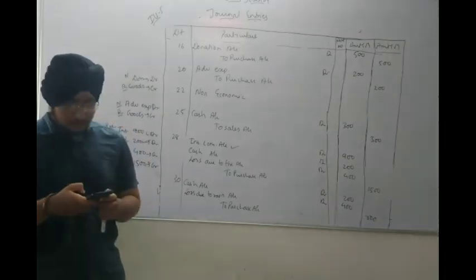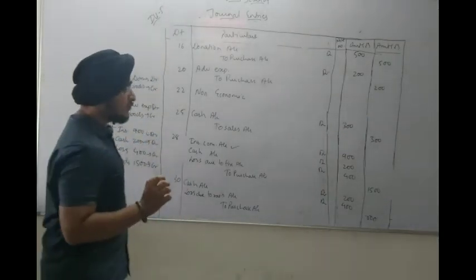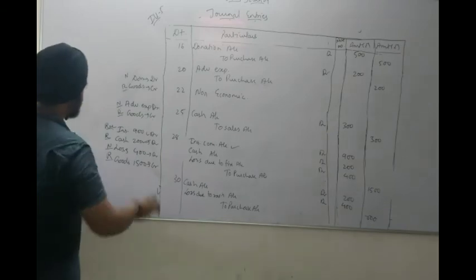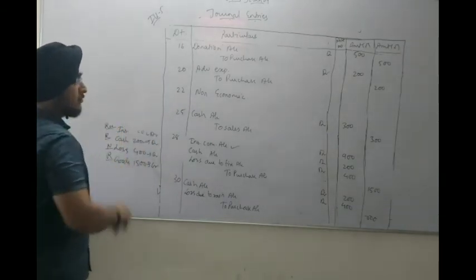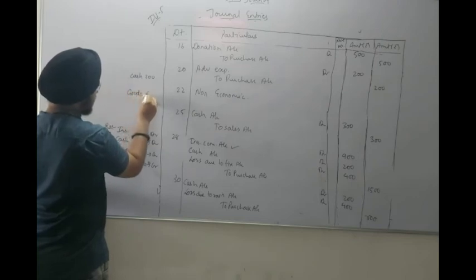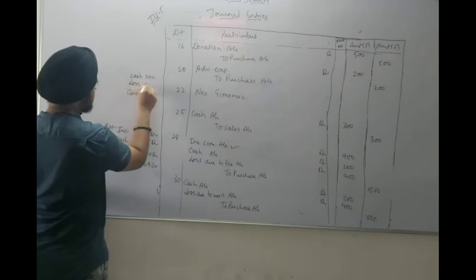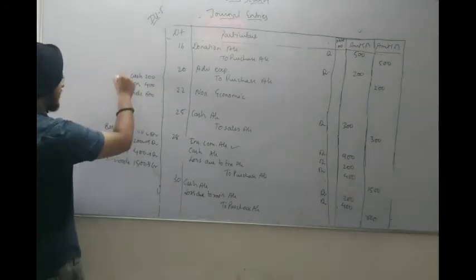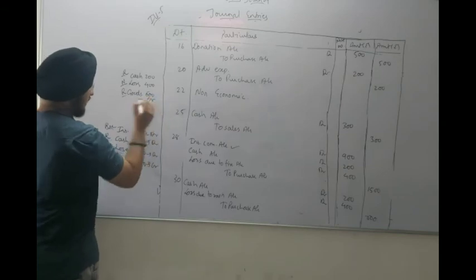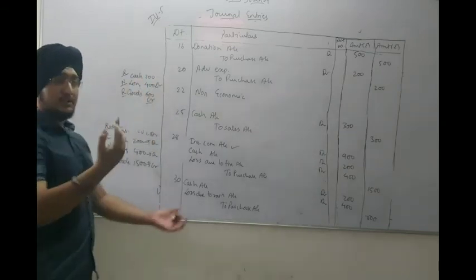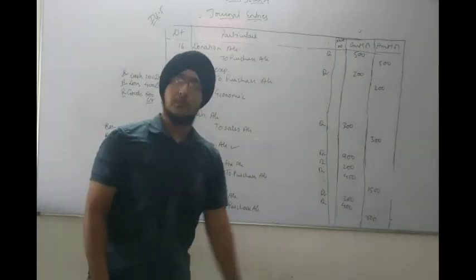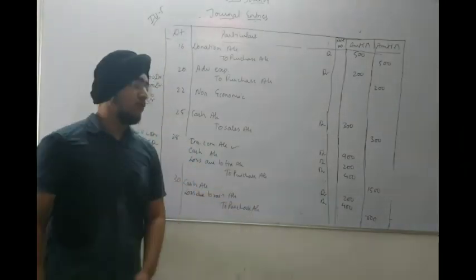Next transaction: Goods of Rs.600 destroyed by rain; salvage sold for Rs.200 cash. Loss = 600 - 200 = Rs.400. Goods go out (real account, credited), Loss is debited (nominal), Cash comes in (real account, debited). Journal entry: Cash account debit 200, Loss due to rain account debit 400 to Purchase account 600.